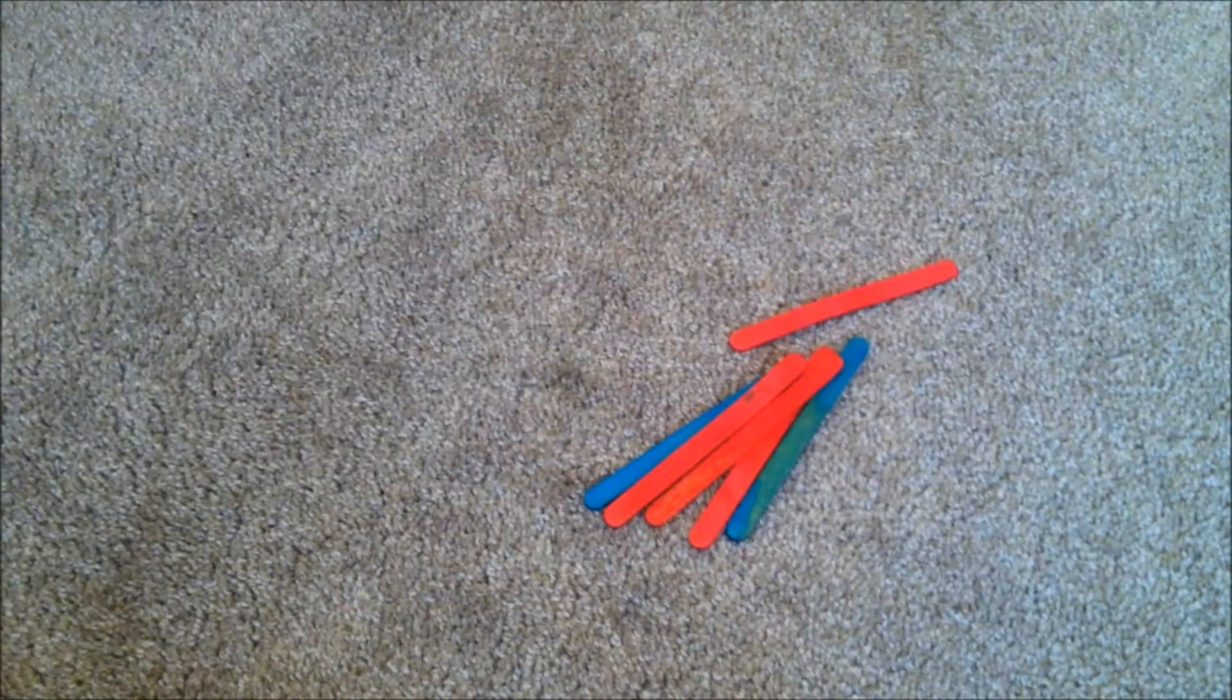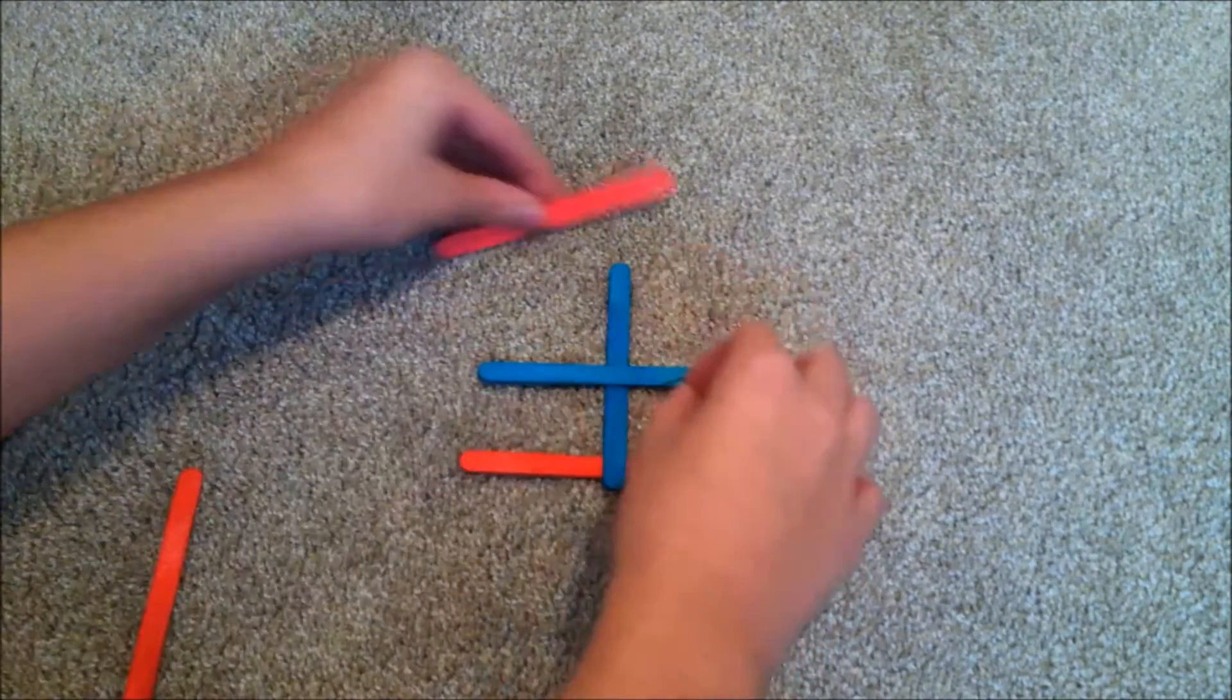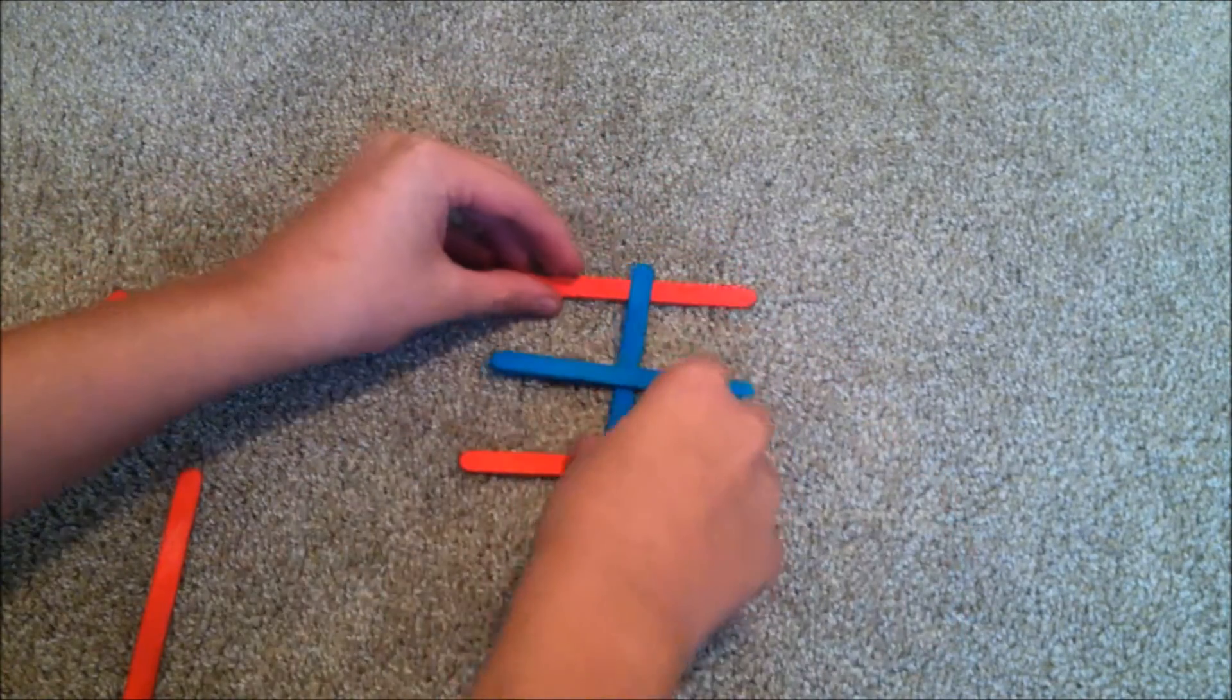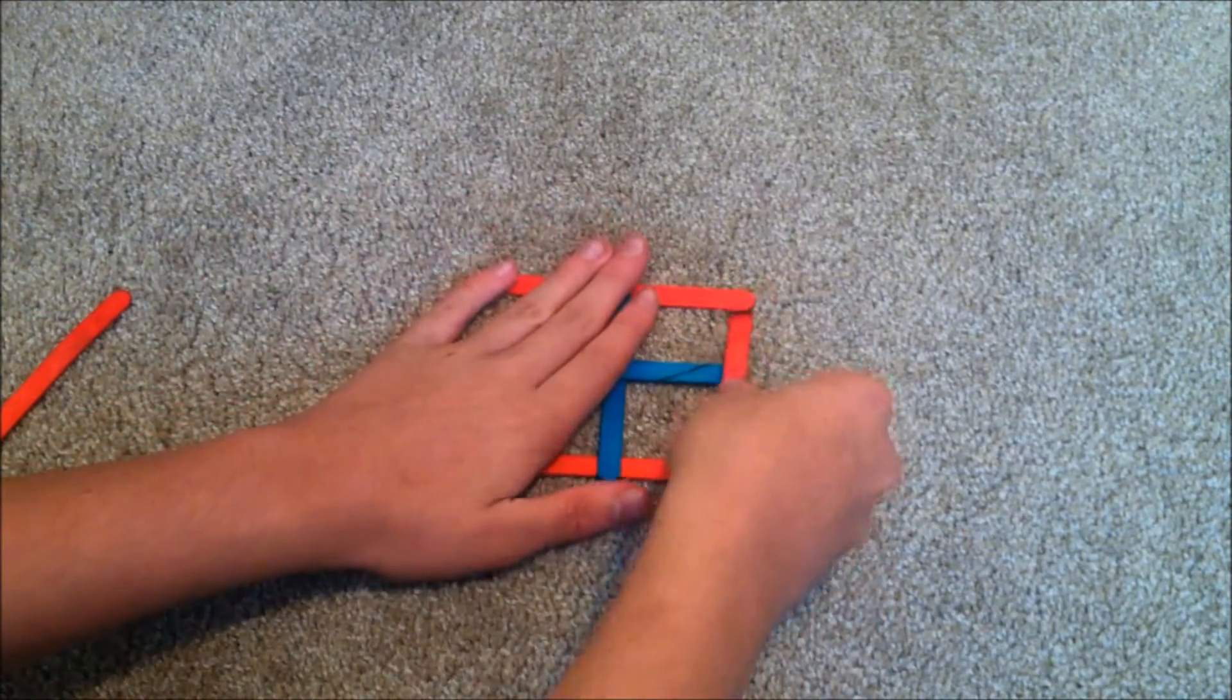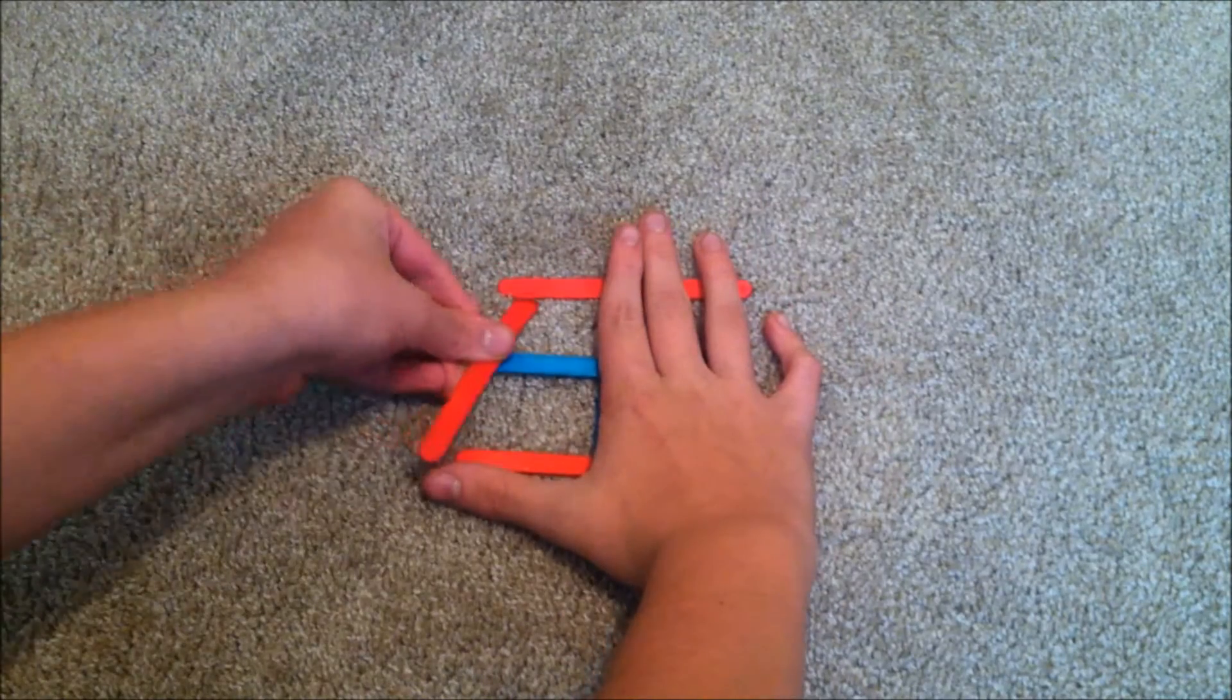This next one is a variation of the Four Square. You need six sticks—just do the same thing you did for the Four Square. This one is called the Flying Fish. If you use the right colors, it will resemble some sort of exotic fish.